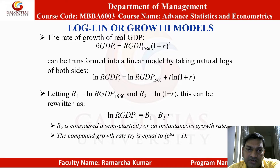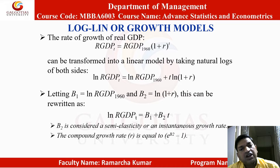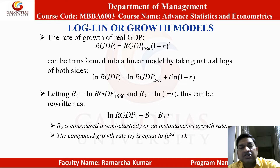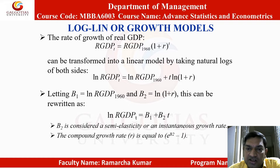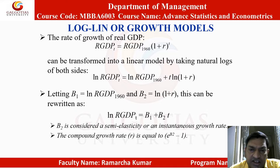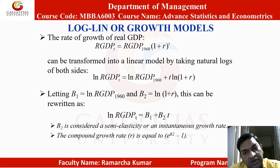Letting B1 = ln(RGDP_1960) and B2 = ln(1 + R), this can be rewritten as ln(RGDP_T) = B1 + B2 times T. B2 is considered a semi-elasticity or an instantaneous growth rate. The compound growth rate R is equal to e raised to the power B2 minus 1.